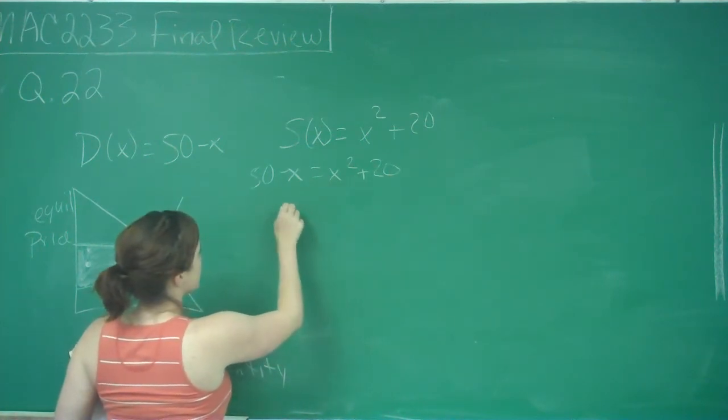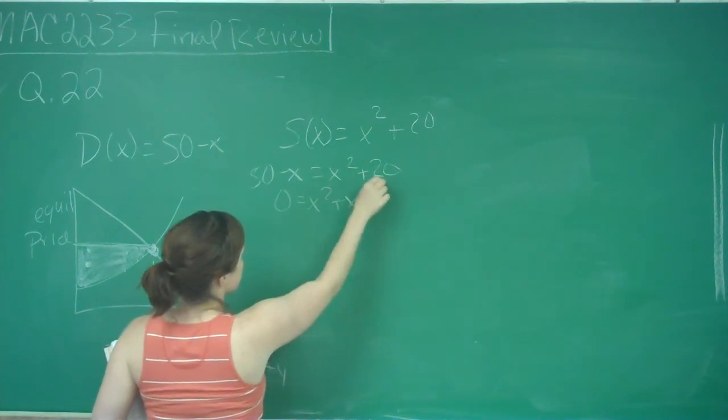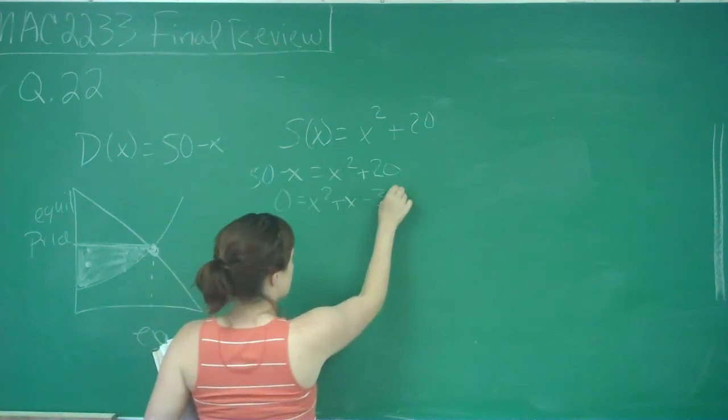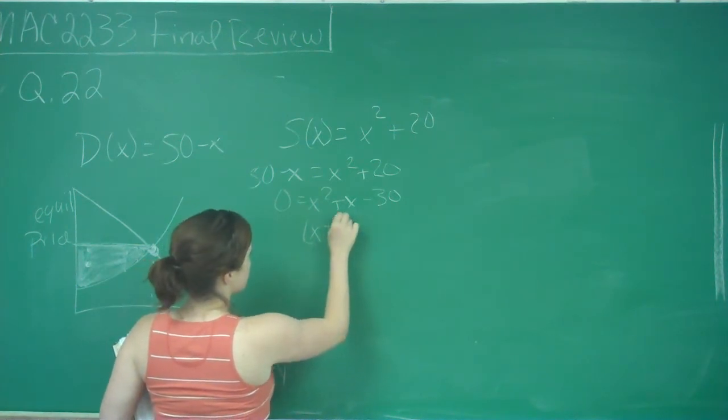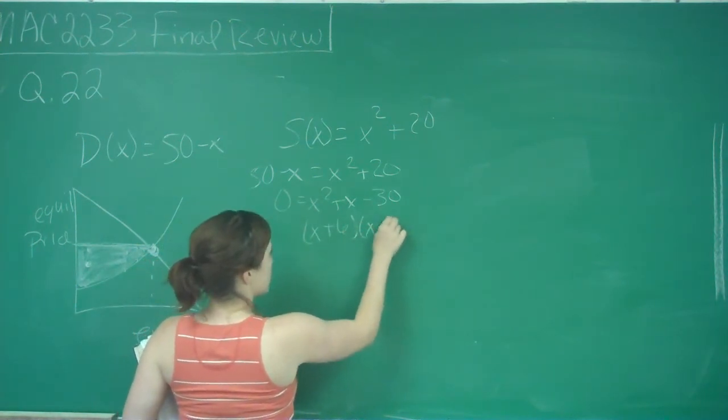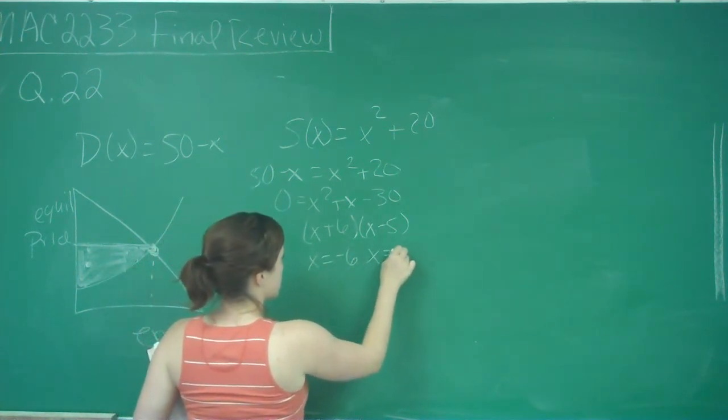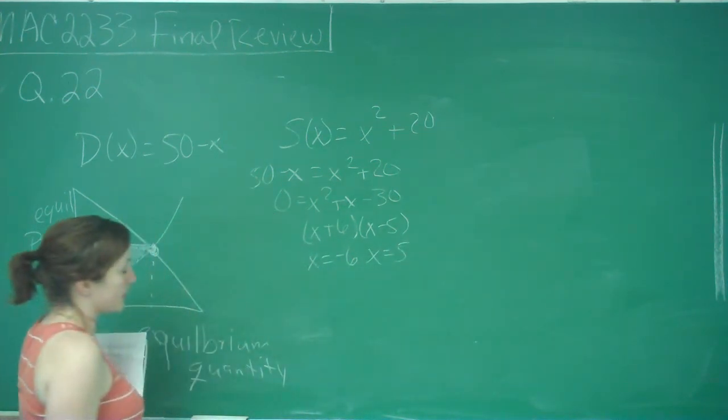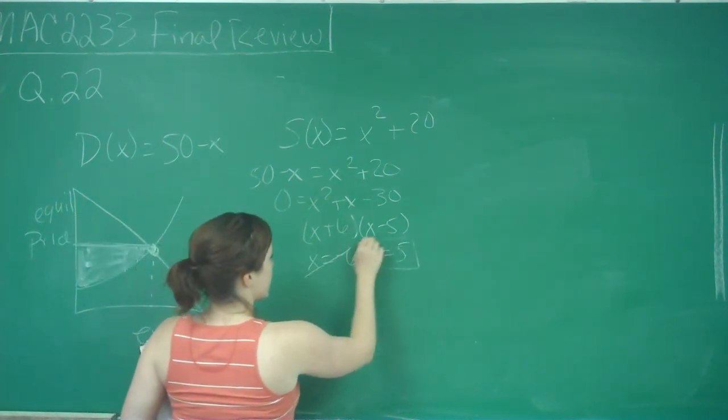I bring everything to one side and get 0 is equal to x squared plus x minus 30. So I can factor this to be x plus 6 times x minus 5. My values are x equals negative 6 and x equals 5. Well obviously our quantity is not going to be negative so our value is x equals 5.